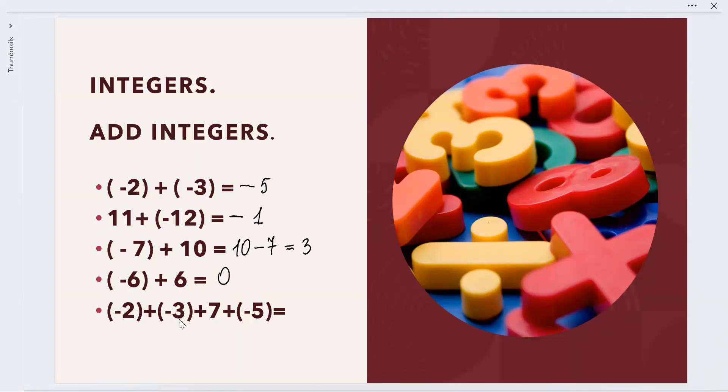And the same strategy when we have more than two addends. For example, we have -2 + (-3) + 7 + (-5). We have three negative numbers: -2, -3, and -5.